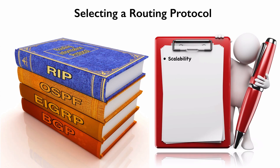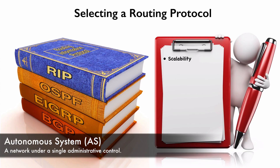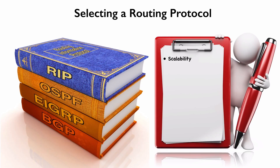EIGRP and OSPF can scale to very large enterprise networks, but BGP — Border Gateway Protocol — is thought of as the routing protocol that runs the internet. It interconnects lots of autonomous systems. An autonomous system is defined as a network under a single administrative control. Your network and your company might be one autonomous system, and if you connect out to a couple of different internet service providers, they're each considered to be their own autonomous system. BGP specializes in routing between autonomous systems.